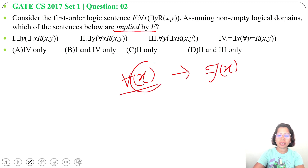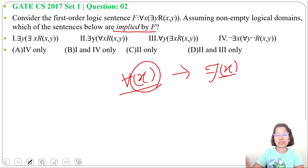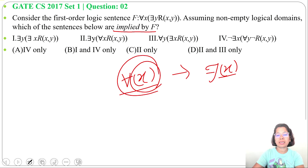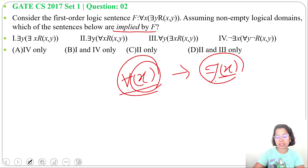If all people are going to the swimming pool, then let person X is also going to the swimming pool. Meaning if a statement is true for all, it is also true for some. So for all X implies there exist X.